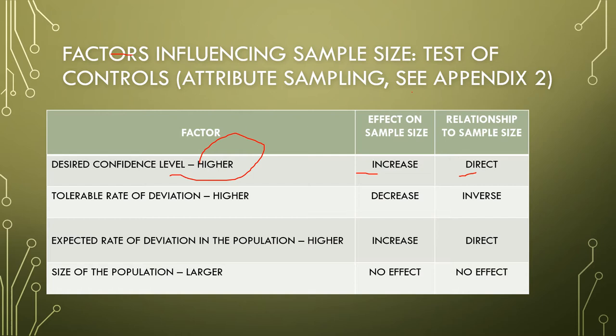Regarding the tolerable rate of deviation, auditors will tolerate deviations and provide some allowance or margin of acceptable deviation because there may be other compensating controls and the end result will not be a material monetary misstatement. Therefore, a higher tolerable rate of deviation leads to a decrease in sample size. This is an inverse relationship.